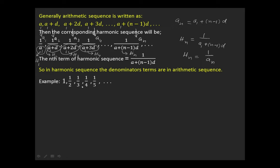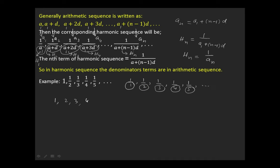For example, consider the harmonic sequence: 1/2, 1/3, 1/4, 1/5, and so on. The denominators are 2, 3, 4, 5, and so on — actually written as 1, 2, 3, 4 and so on — and these form an arithmetic sequence or arithmetic progression.